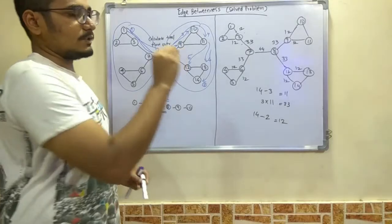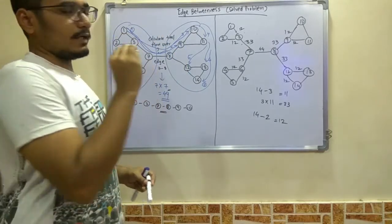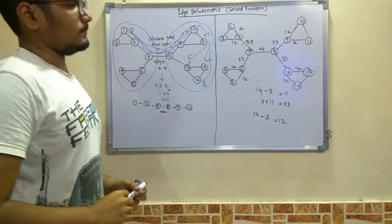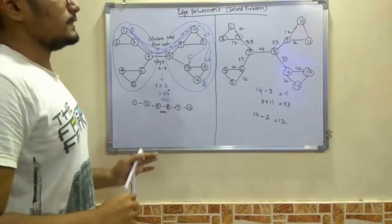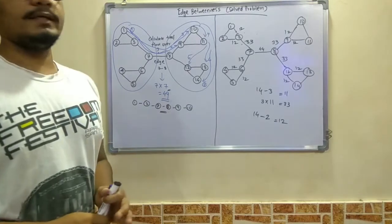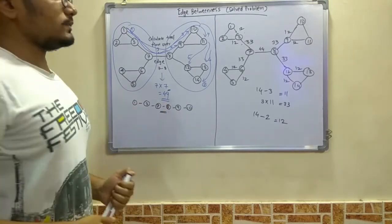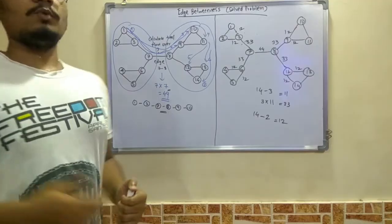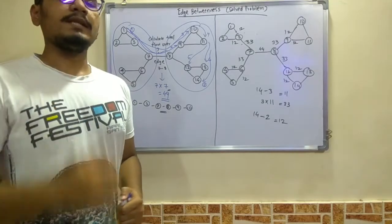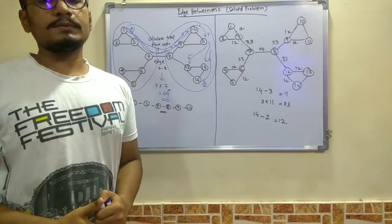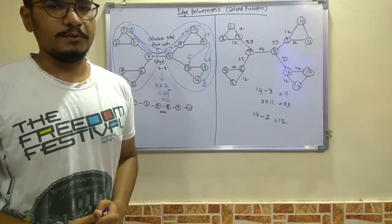This is a very simple problem. There are not many steps for edge betweenness — you just have to arrive at the proper answer by considering all the relevant paths given in the problem. This was all about edge betweenness in Big Data Analytics for social graph mining. Hope you enjoyed this video. If you found it helpful, please hit the like button, and if you haven't subscribed to my channel, please subscribe. Thanks for watching.